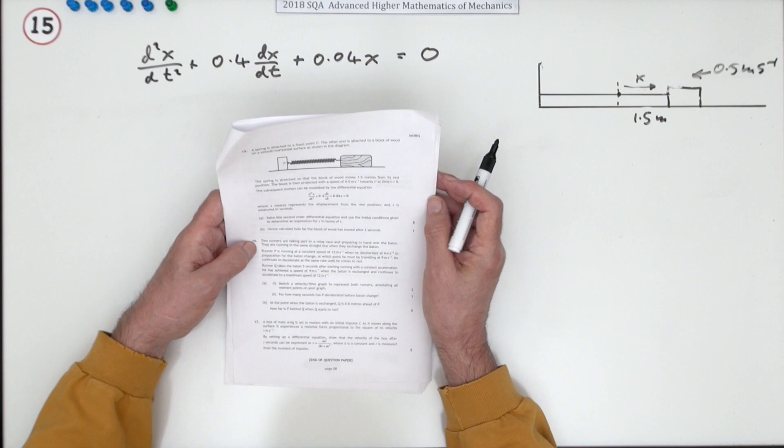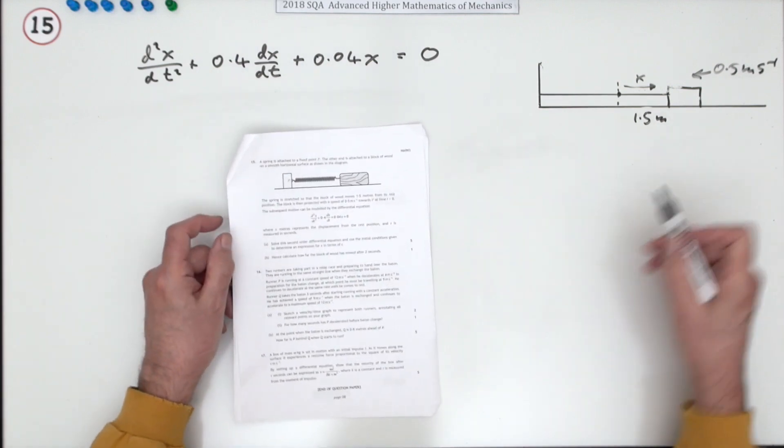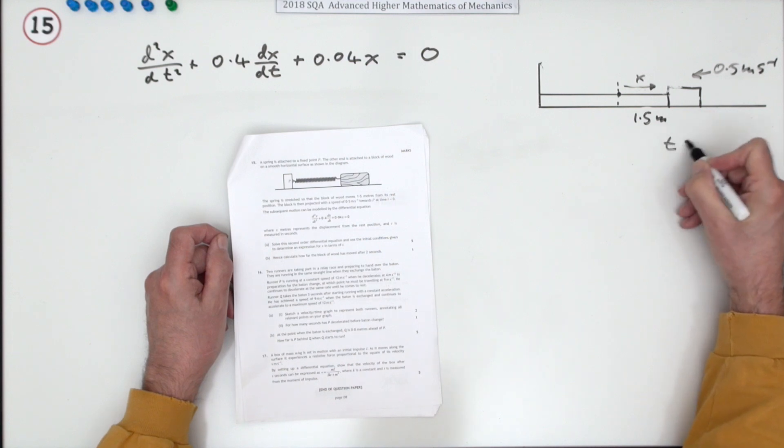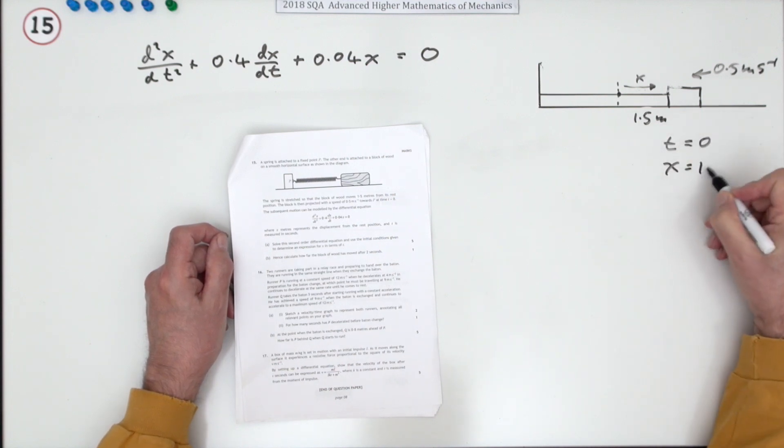Solve the second order differential equation and use the initial conditions. Now the initial conditions are what happens at the start. You pulled it back, so at the start, which is t equals 0, the displacement was positive 1.5.